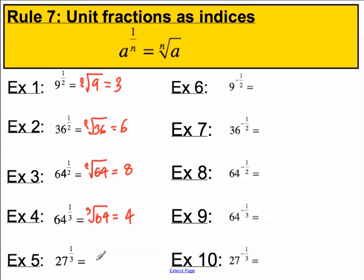Twenty-seven to the one over three. Well, that's equal to the cube root of 27. What number multiplies by itself three times to get 27? Well, the answer is three, because three times three is nine, times another three is 27.